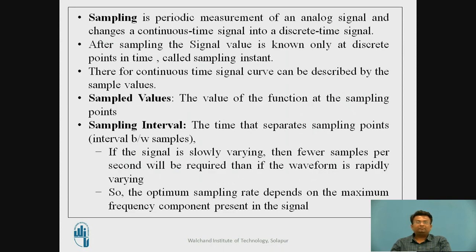Sampling is a periodic measure of the analog signal. It changes the continuous-time signal into a discrete-time signal. After sampling, the signal value is known only at discrete points in time. These points are called sampling instants. Therefore, the continuous-time signal curve can be described by the sample values.